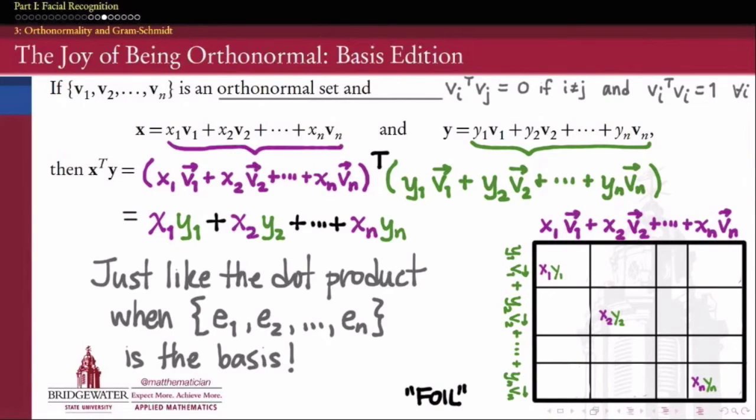In other words, with respect to computing the dot product of two vectors, every orthonormal basis on a given vector space acts exactly the same as the standard basis does. That's pretty cool.